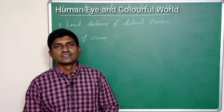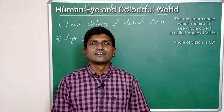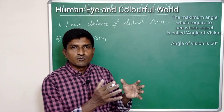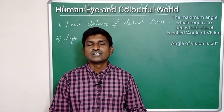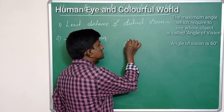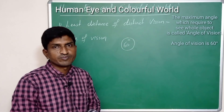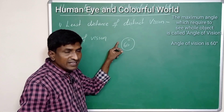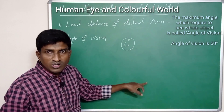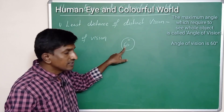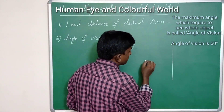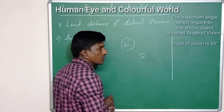Now let's come to the angle of vision. The angle of vision is the maximum angle needed to see the whole object completely. The maximum angle of vision is 60 degrees. If light from the top and bottom of an object makes an angle of 60 degrees at our eye, then we can see the whole object.